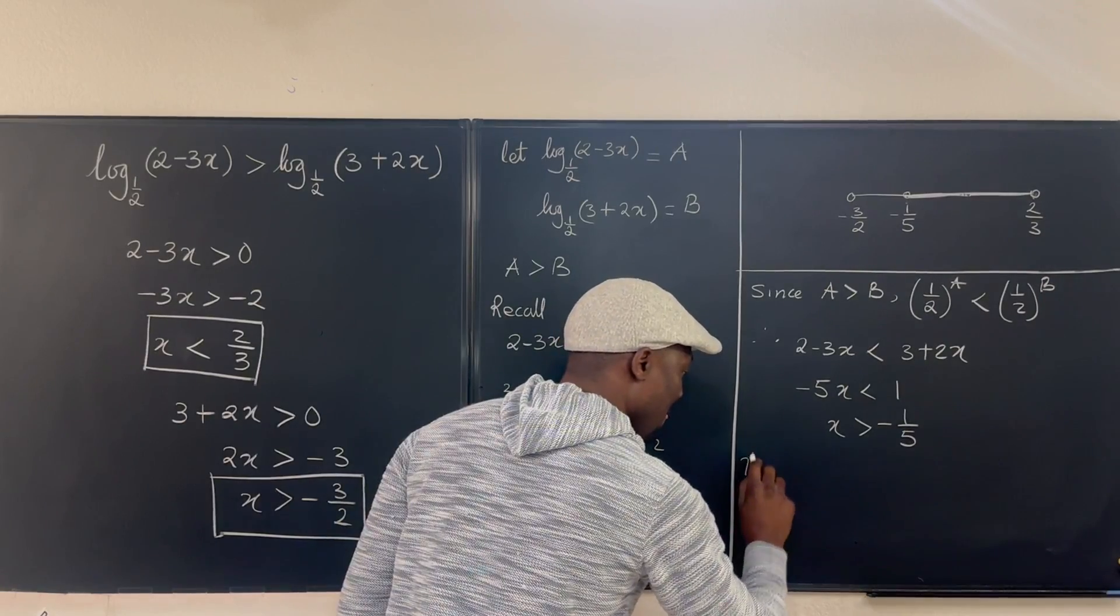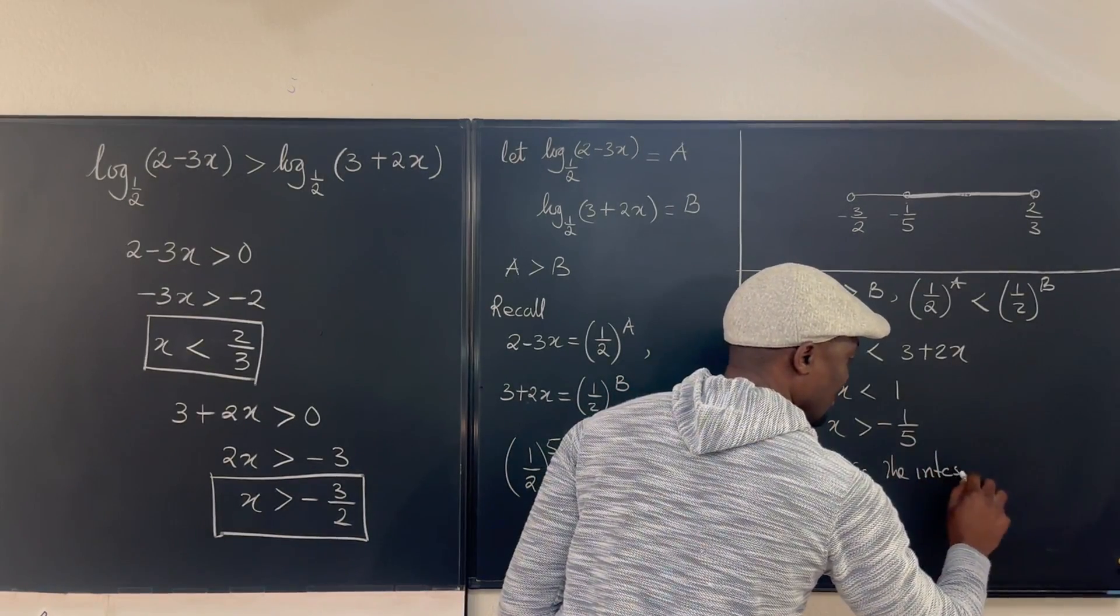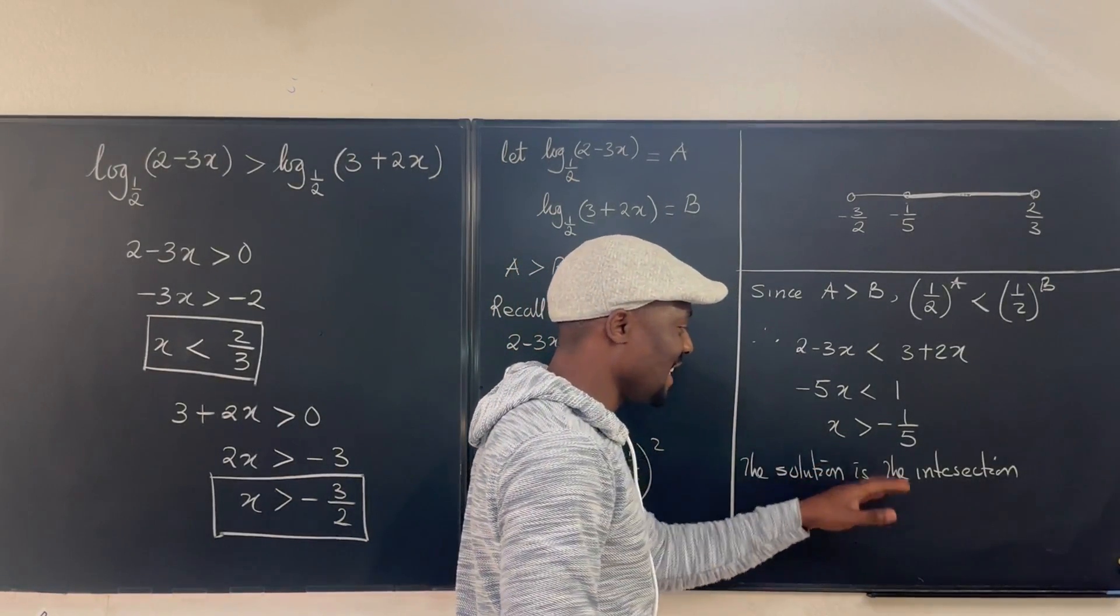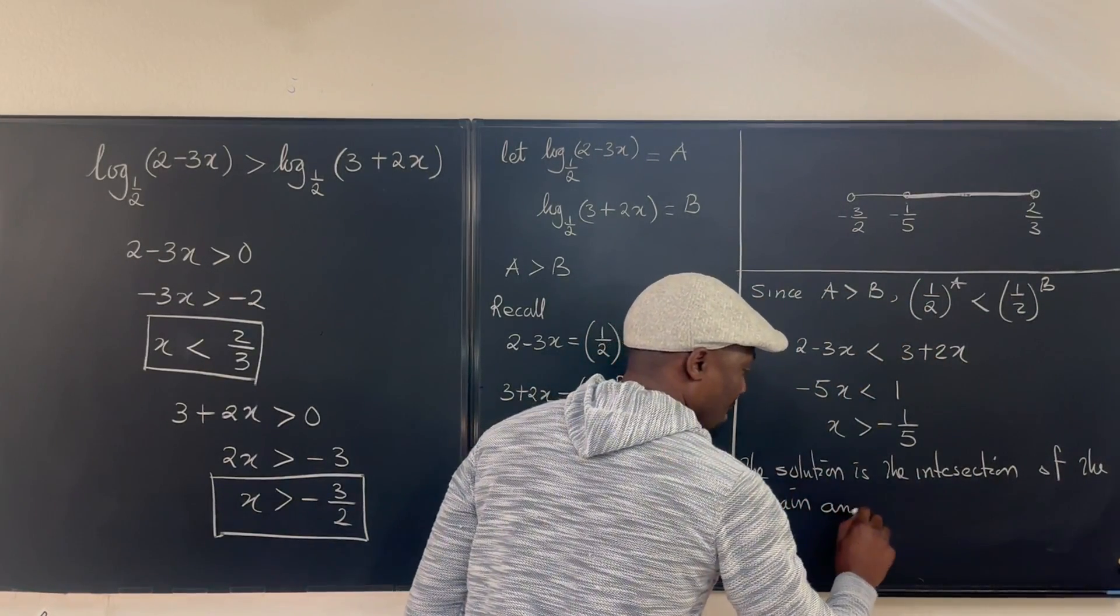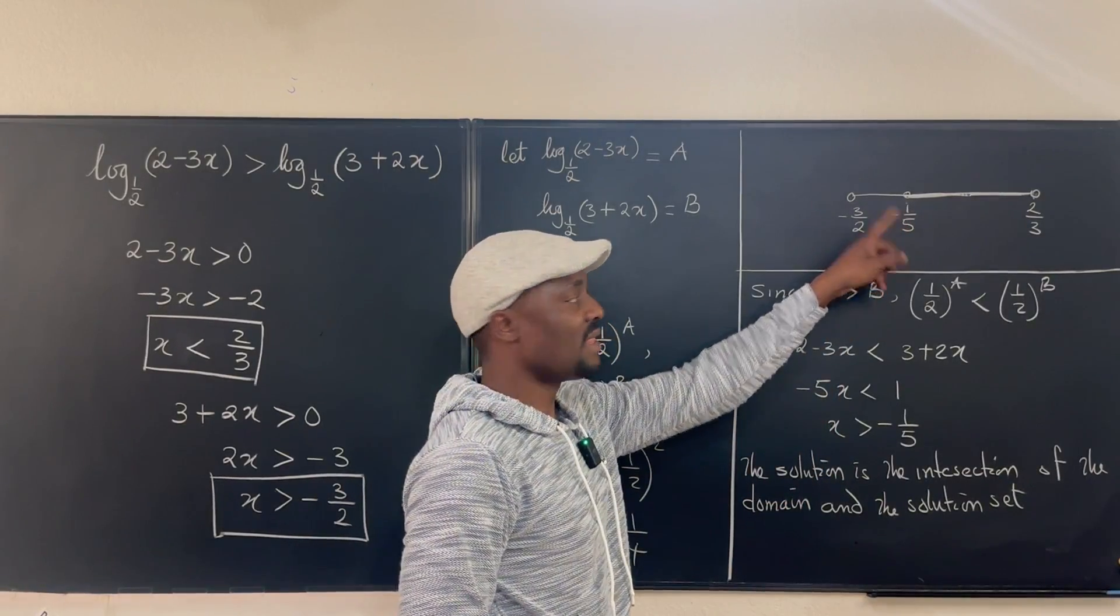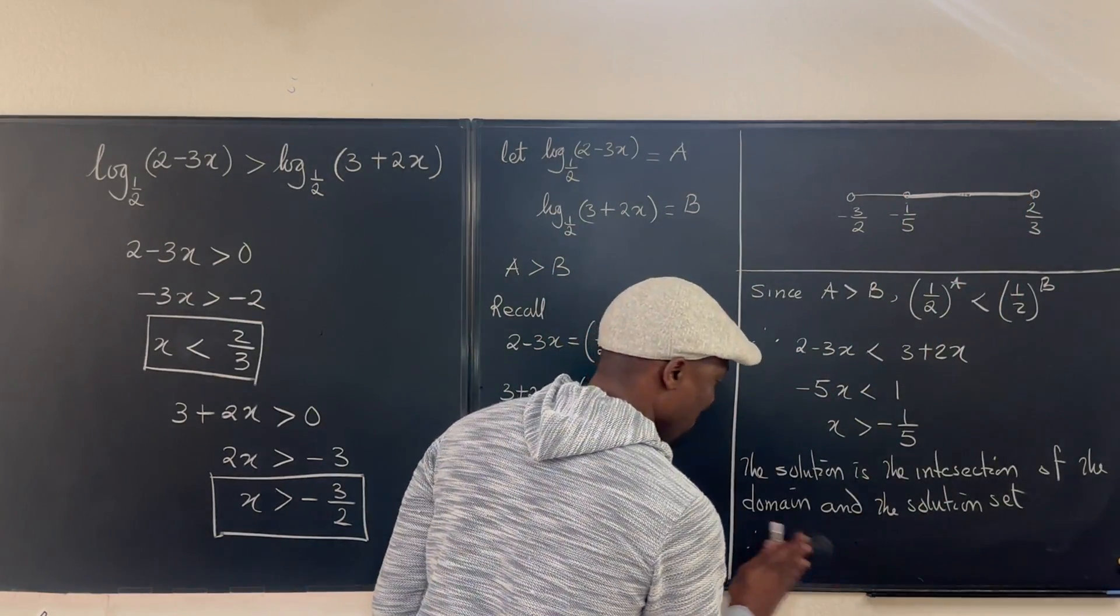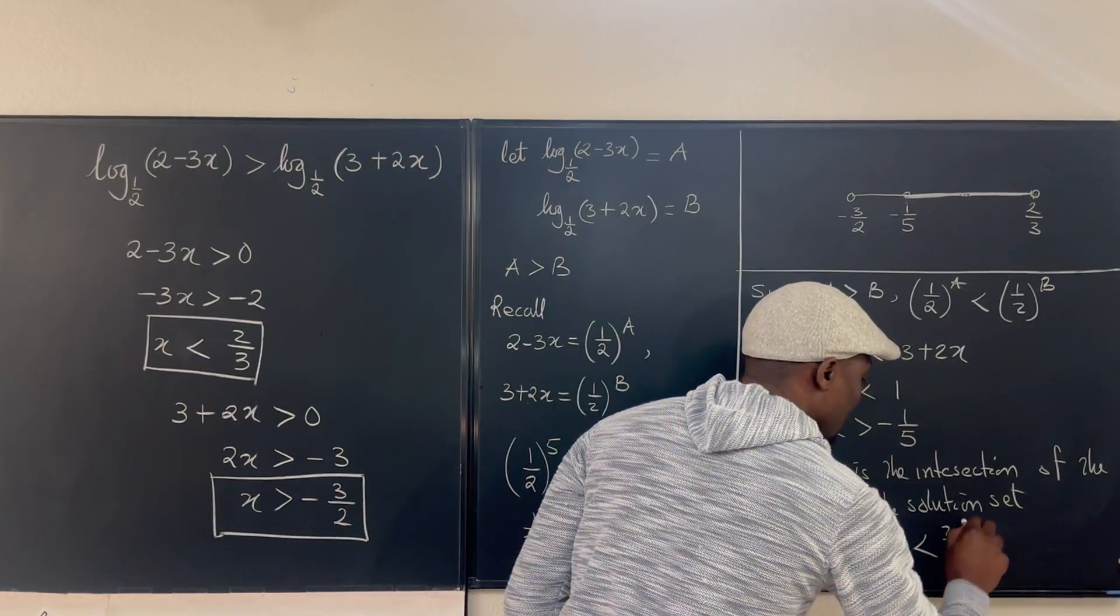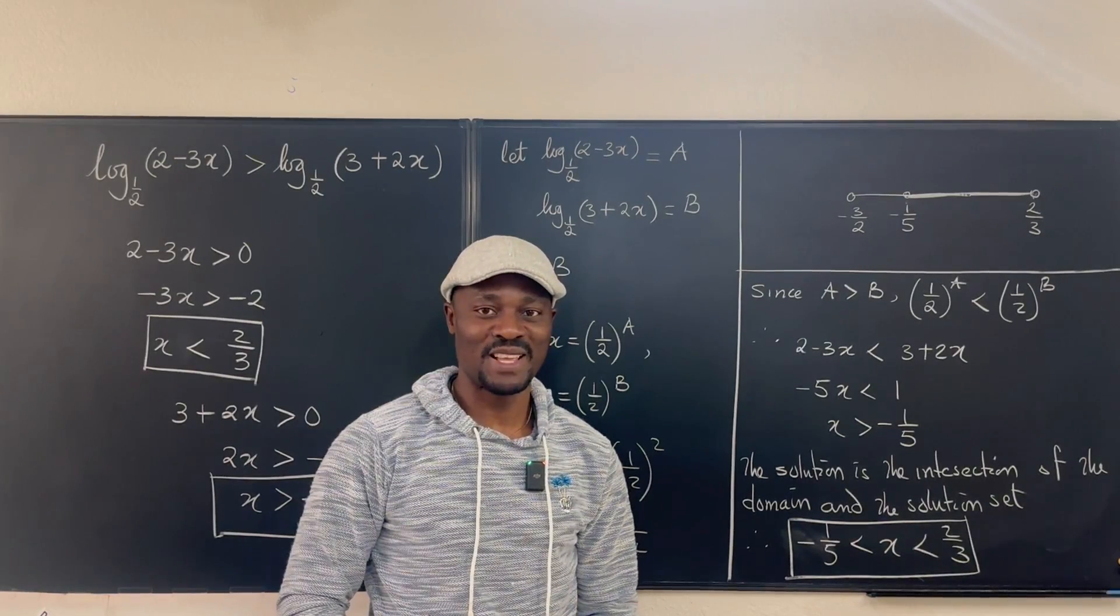So the solution, the solution is the intersection of the domain and the solution set. So this is our solution set. This is the domain that we got before. The part that is common to both of them is our solution. And it is from here to here. So we say, therefore, we have negative 1/5 is less than x and x is less than 2/3. That is the answer that we're looking for. Never stop learning. Those who stop learning, stop living. Bye-bye.